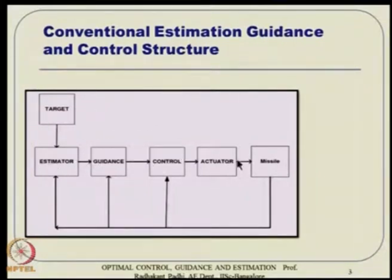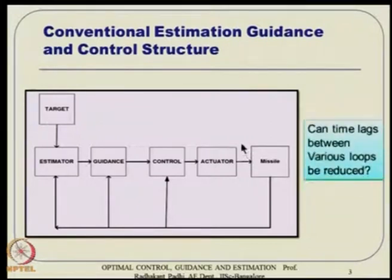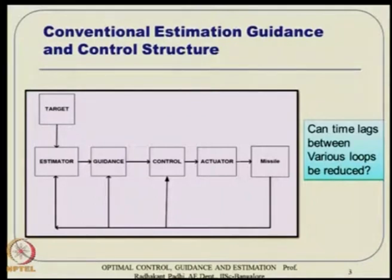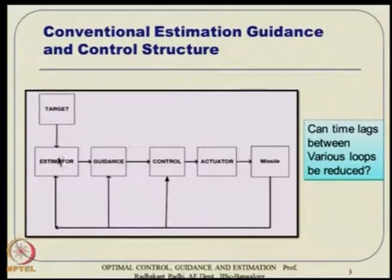When somebody talks about estimation, he typically ignores everything inside the guidance-control loop. When somebody talks about guidance, he ignores everything else; control similarly. The question is: can the time lag between various loops be reduced? Because when you have loops after loops, inner loops must be sufficiently faster than the outer loop — outer loops must be sufficiently slower than inner loops.